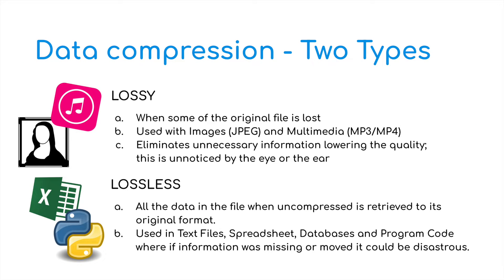There are two main types of data compression — the clue is in the name. The first is lossy and the second is lossless. Lossy is when some of the original file data has been removed. This may affect the quality slightly. It's used with images such as JPEGs and also in MP3 and MP4 compression. It eliminates unnecessary information, and although it loses some quality, this generally goes unnoticed by our eyes or ears.